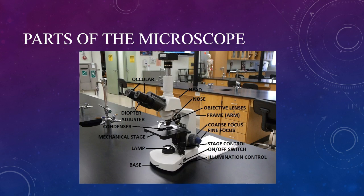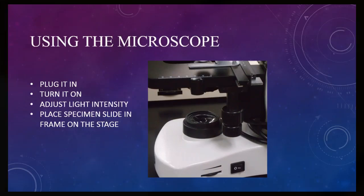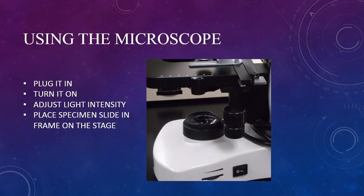Above the lamp, resting in the mechanical stage, is the condenser. This lens condenses the light from the lamp into a small circle below the objective lens. The specimen sits in a frame on the mechanical stage and is moved by two stage control knobs located below the stage. This picture shows the controls for the mechanical stage much better.